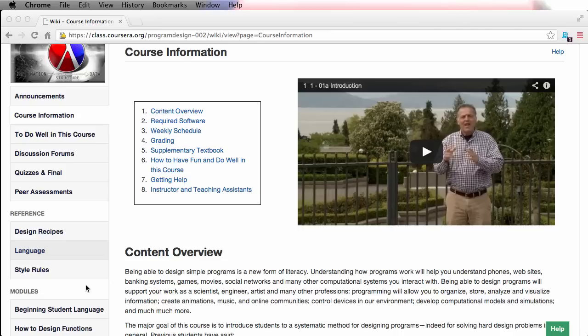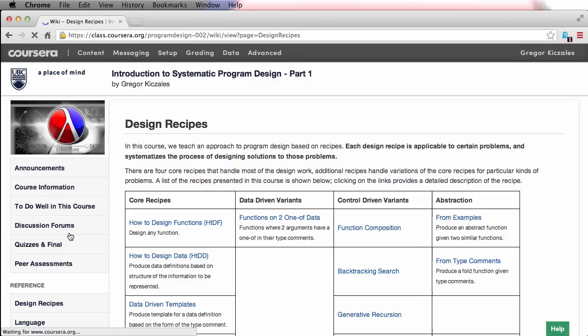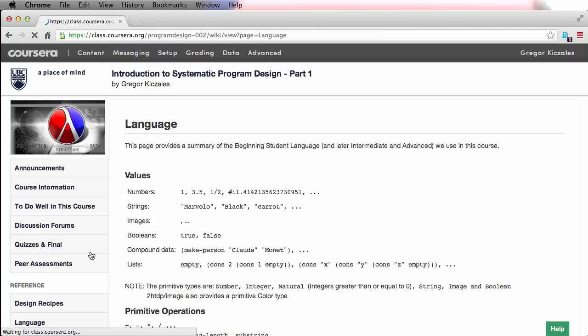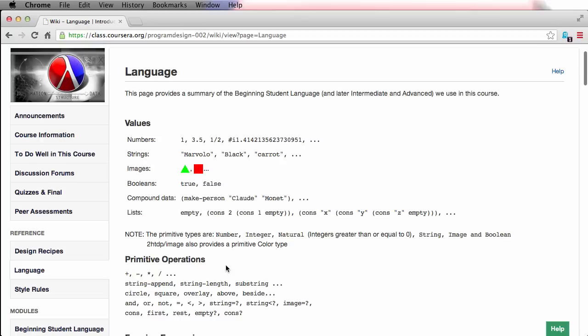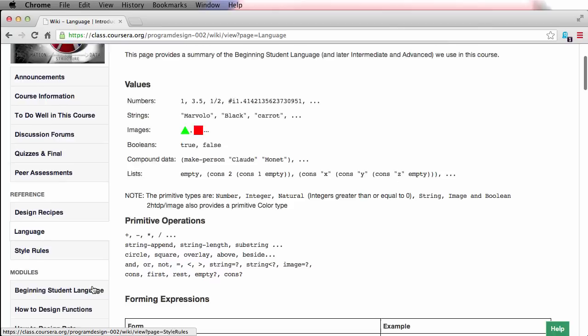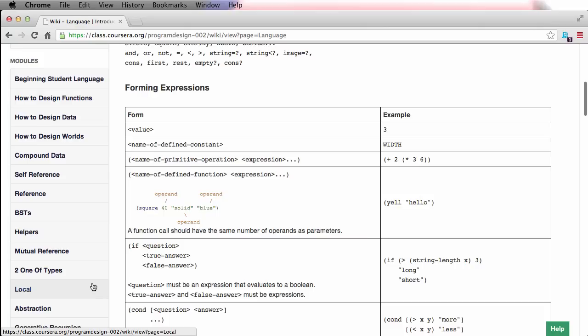Okay, now what's in these pages, the reference pages? Well, as I said in the introduction, in this course we're going to teach you some systematic design method or design recipes. The design recipes page is a link to all those recipes. Here they are presented and we'll be working through all of them as we go. The language page is a quick one-page summary of the programming language that we'll be using. And the style rules page is some additional rules about how to make your program easy to read.